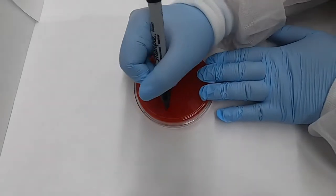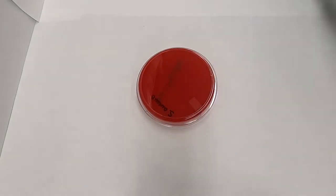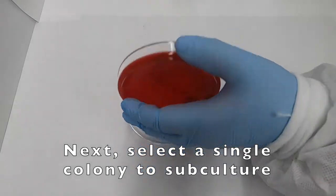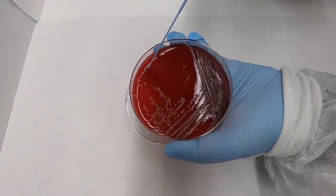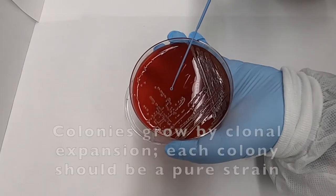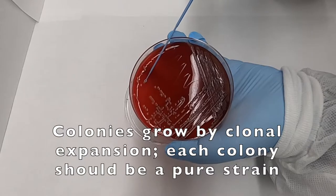When performing a subculture, the first step is to label your fresh blood agar plate so that you know where your culture came from. Next, we select a single colony on our primary plate that we want to subculture. It's important to select just one because we want it to be clonal and genetically homogeneous.